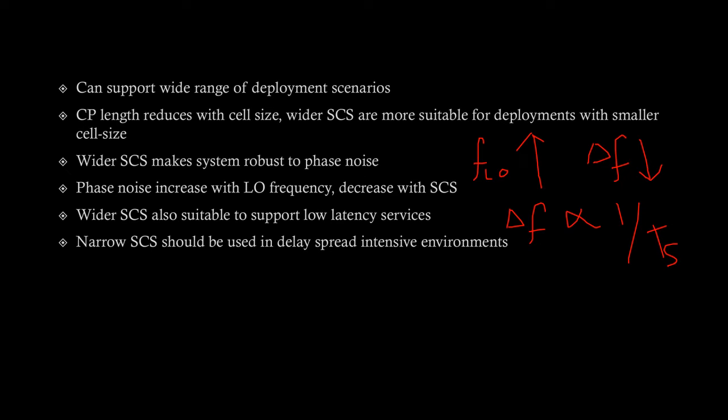But in cases where delay spread is high, CP length should also be higher. So, in that case, we should be using narrow subcarrier spacing like 15 or 30 kHz. Now, you might be thinking that in these cases like in lower subcarrier spacing cases like in higher delay spread cases, we will not have wider subcarrier advantages or we will not be having advantages which are related with wider subcarrier spacing.